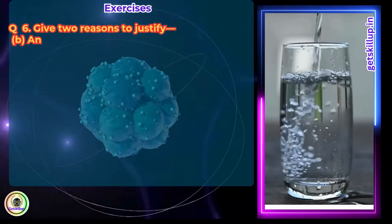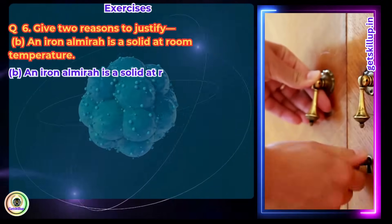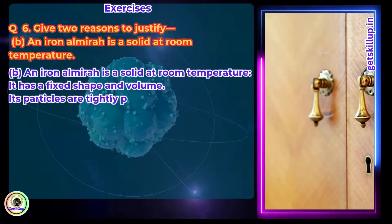b. An iron almirah is a solid at room temperature. Answer: It has fixed shape and volume. Its particles are tightly packed and rigid.